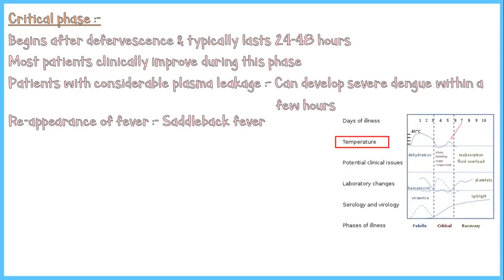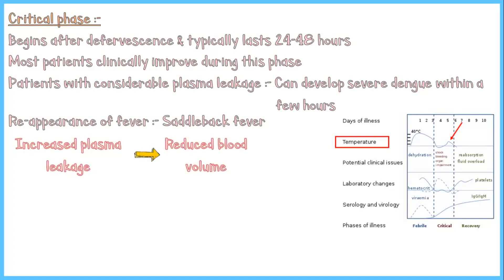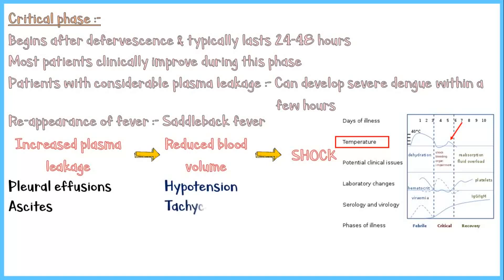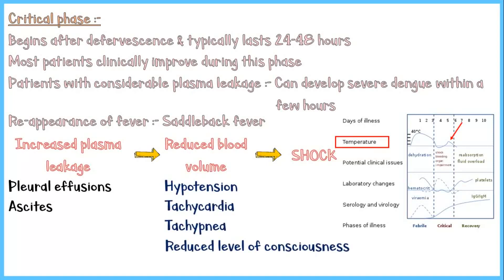This graph shows the reappearance of fever during the critical phase. Increased vascular permeability is the cause of extensive plasma leakage. Due to the plasma leakage, blood volume starts to drop, which ultimately results in hypovolemic shock. The patient may have conditions like pleural effusions and ascites, and due to the reduced blood volume, the patient may have hypotension, tachycardia, tachypnea, reduced level of consciousness, and hemoconcentration.